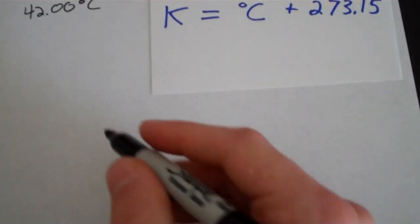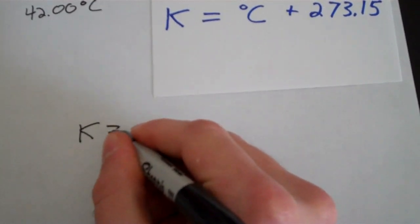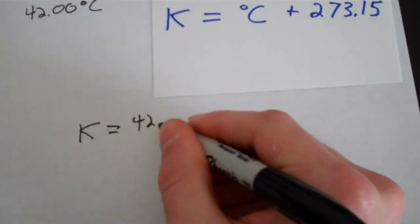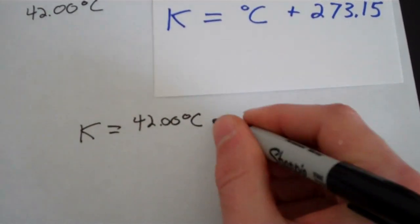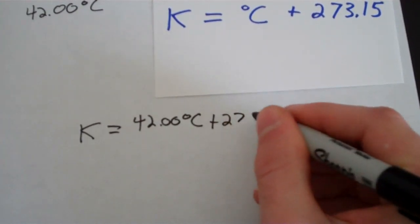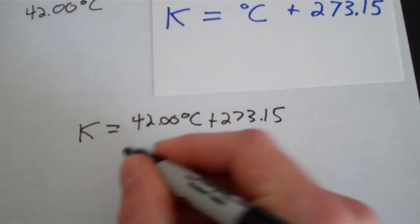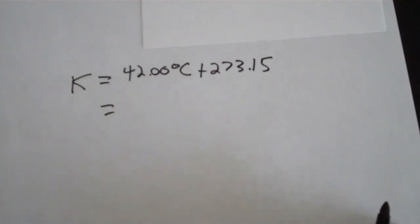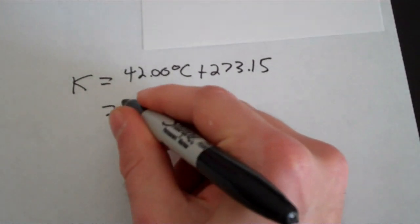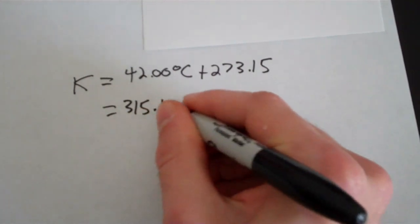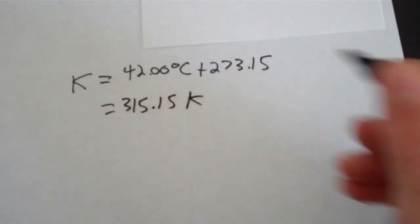All we have to do is just plug it in and solve. So we get Kelvin equals 42.00 degrees Celsius plus 273.15. Spit that into a calculator and you get 315.15 Kelvins.